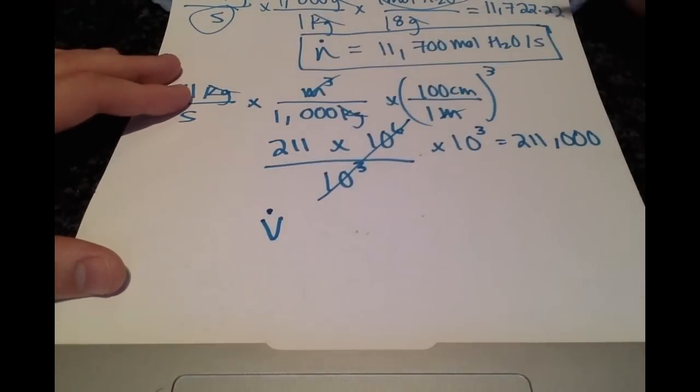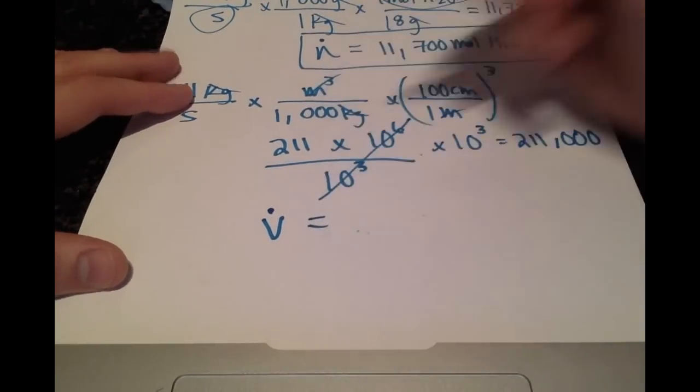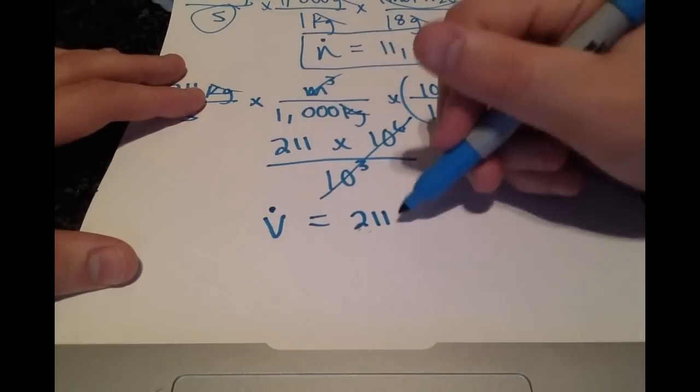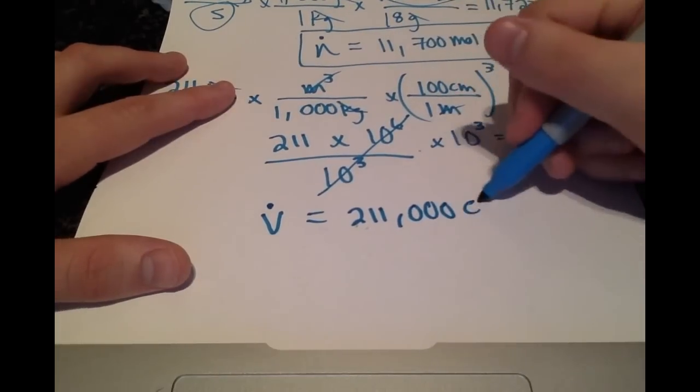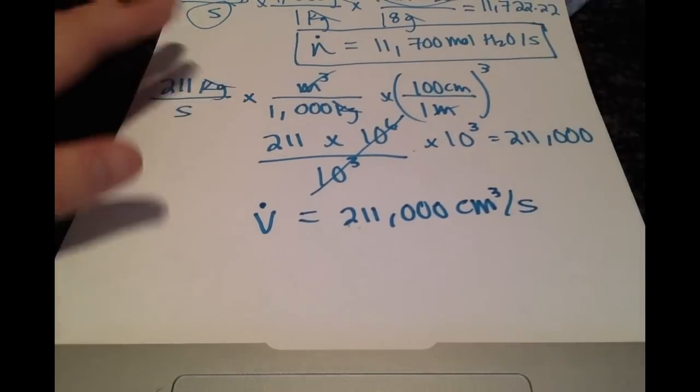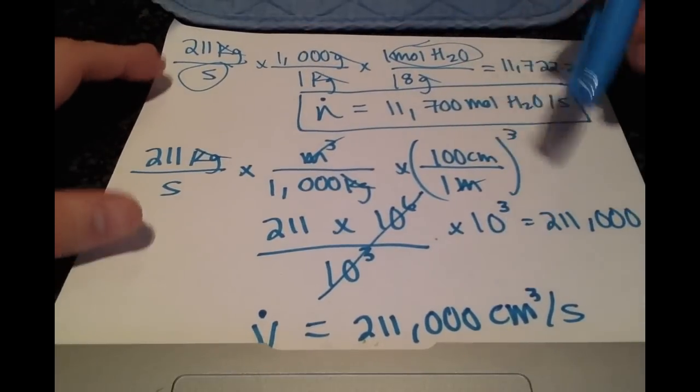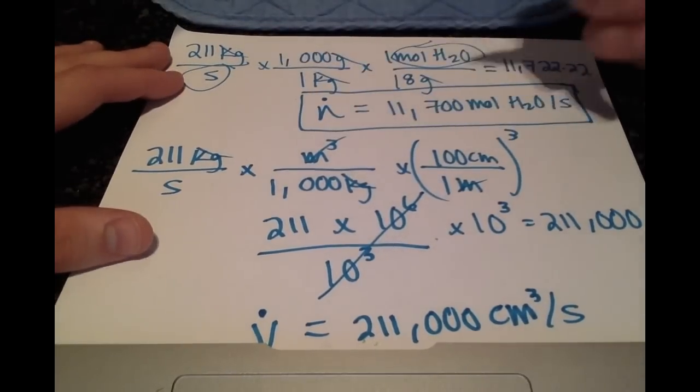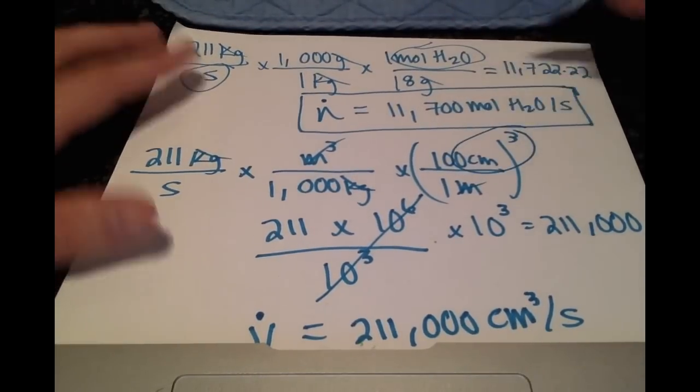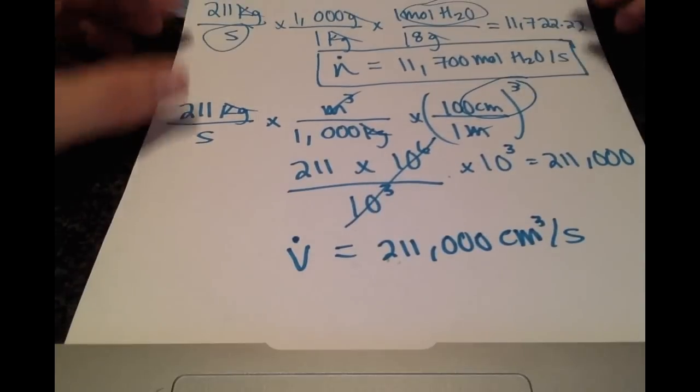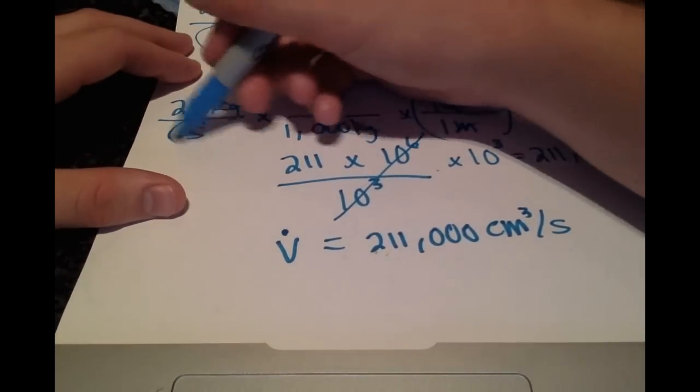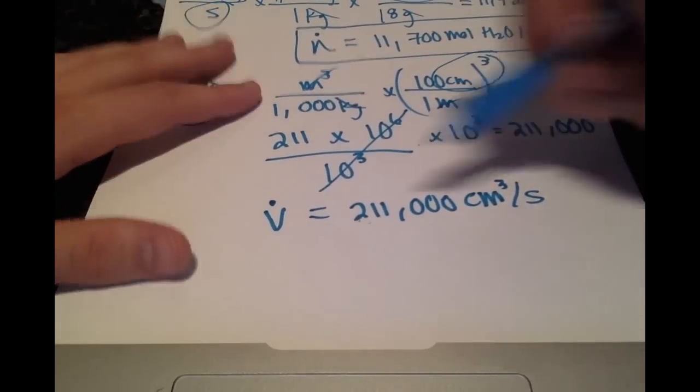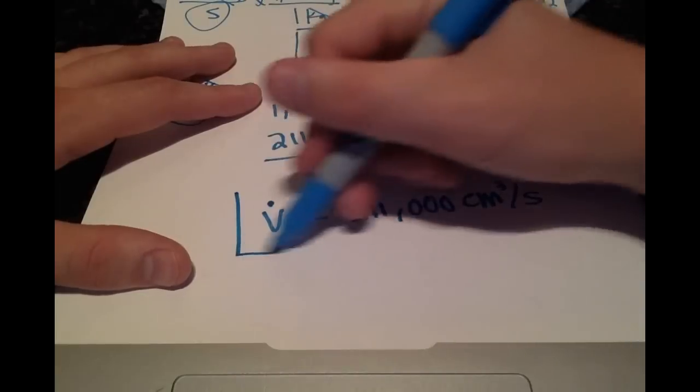So with our notation for volumetric flow rate, it will be 211,000 centimeters cubed per second. And we get that, the final units, by looking at what we canceled out. So we see that we have the centimeters cubed here and we also have our seconds here. So that's how we get the final units for the volumetric flow rate.